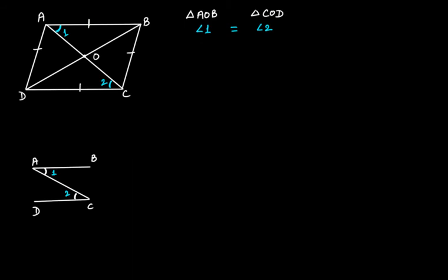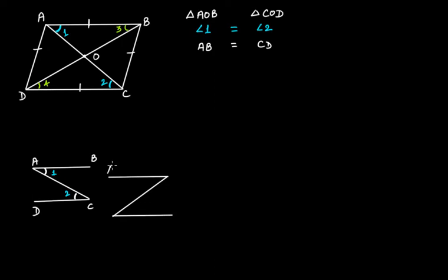Side AB is equal to side CD. Similarly, looking at the other pair of parallel lines, angle 3 and angle 4 are formed. Since AB is parallel to DC with a transversal, angle 3 is equal to angle 4 by alternate interior angles.